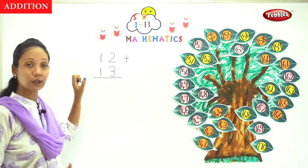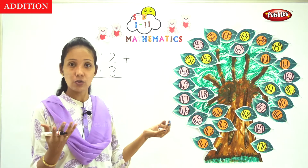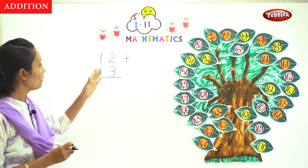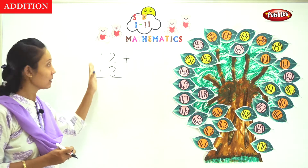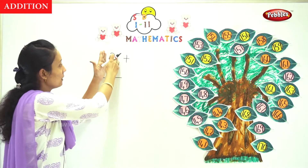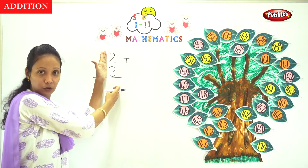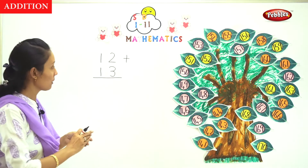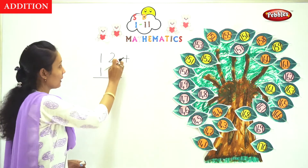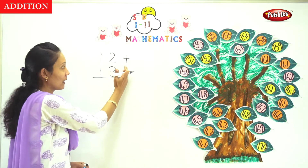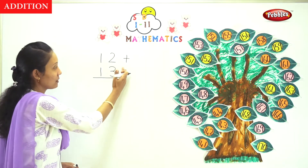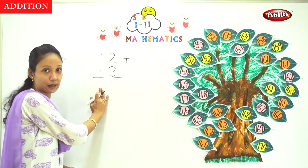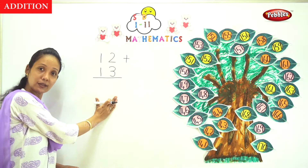Now, do you have 12 fingers? No. So you cannot count 12 fingers directly. When you have two-digit numbers, first you have to add the ones digits — the numbers on the right side. You are not supposed to start from the left. You are supposed to add from the right number first. These two right-side numbers you should add first, and then the left.